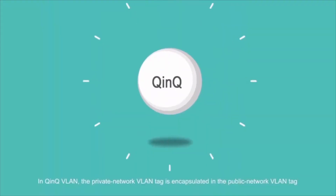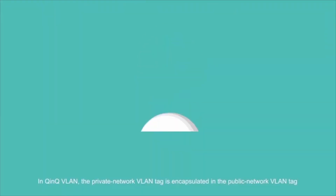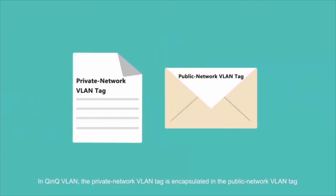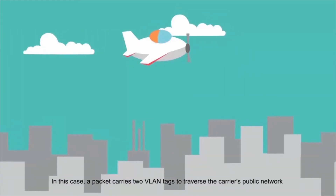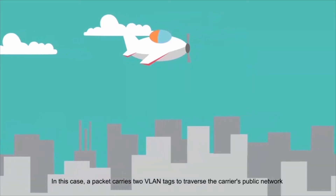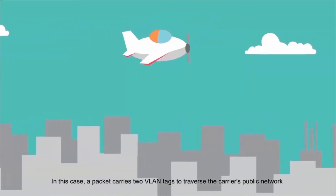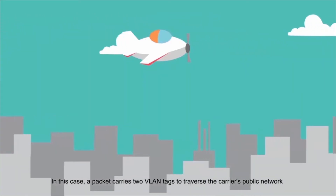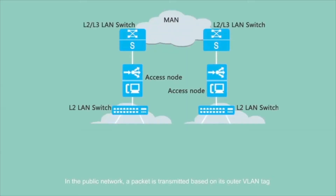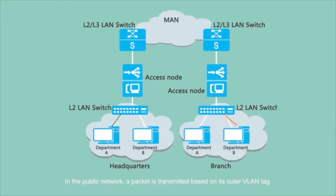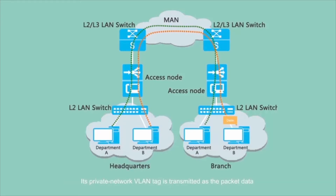In QinQ VLAN, the private network VLAN tag is encapsulated within the public network VLAN tag. In this case, a packet carries two VLAN tags to traverse the carrier's public network. In the public network, a packet is transmitted based on its outer VLAN tag, while its private network VLAN tag is transmitted as the packet data.